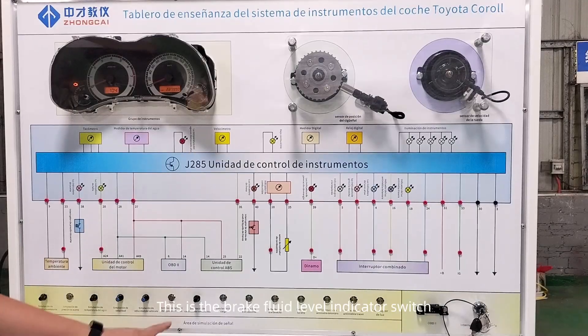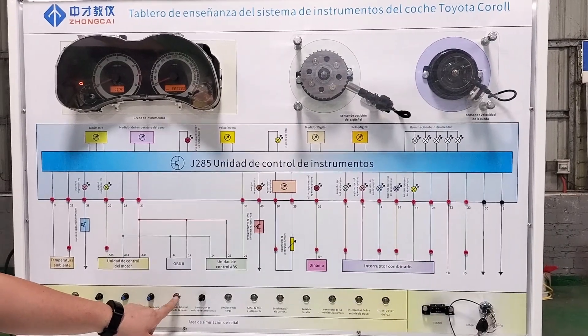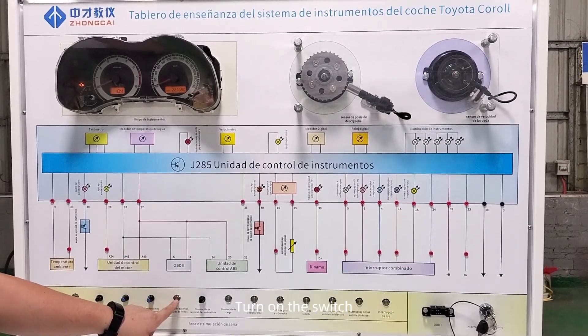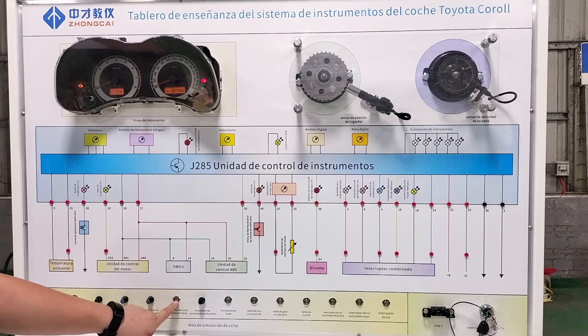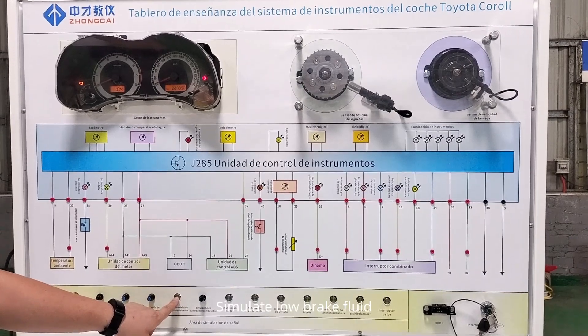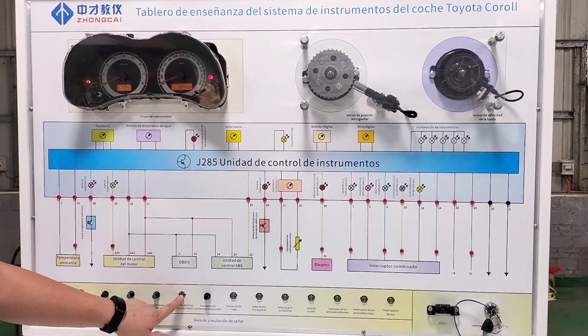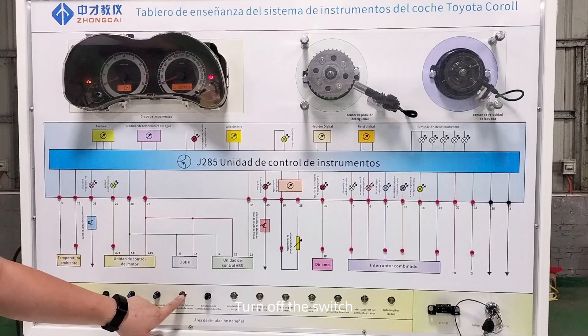This is the brake fluid level indicator switch. Turn on the switch — the indicator light turns on, simulating low brake fluid. Turn off the switch.